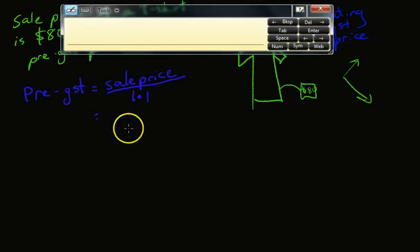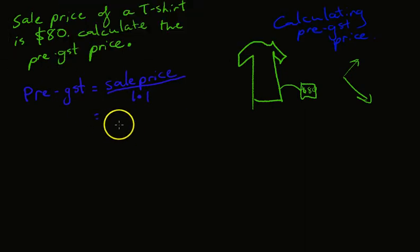So let's do our working. Sale price is $80. We're going to divide it by 1.1. Definitely going to need a calculator for that. I've picked an odd number here. If you look at my calculator, it's like 72.7272. Anyway, so I'm rounding that to the nearest cent. So the pre-GST price of this is $72.73. That's the pre-GST price.